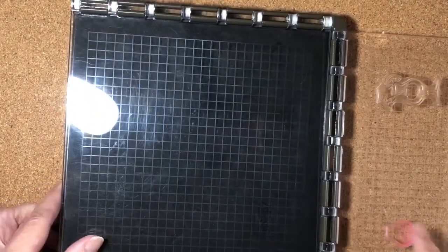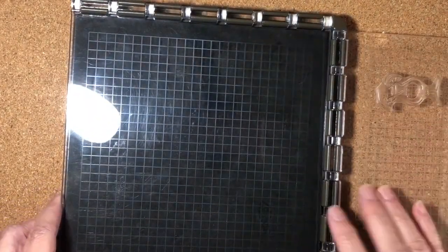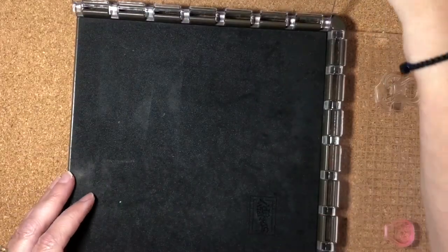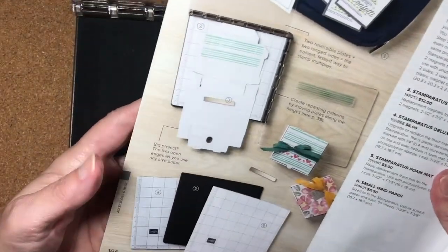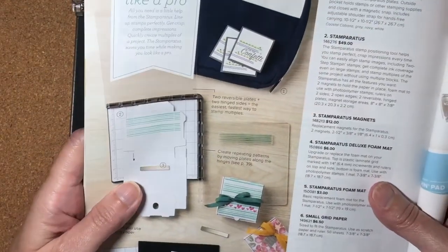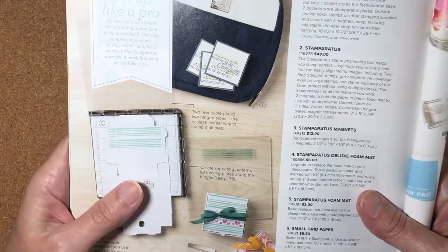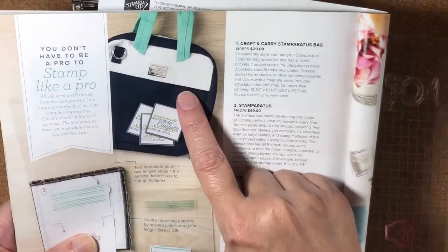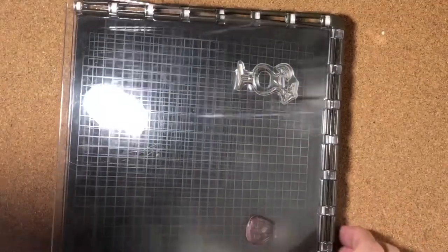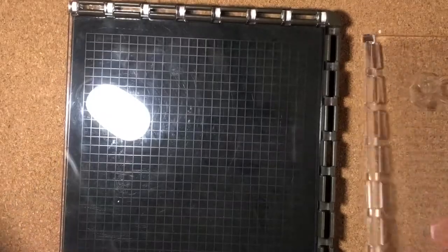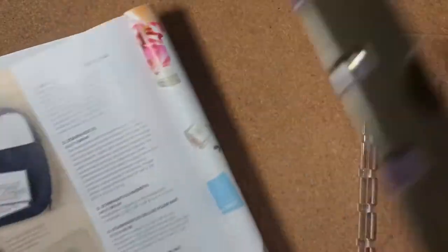Let me put this aside and bring in my Stamparatus. Here's my Stamparatus. I've already put my stamps on there to have them in the correct location. If you're not familiar with the Stamparatus, it is here on page 164 of our current 2021 annual catalog. We do have a carrying case, the Stamparatus itself, magnets, which are stored on the back.